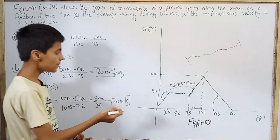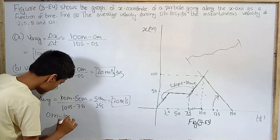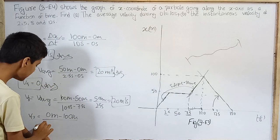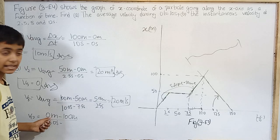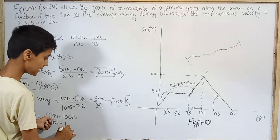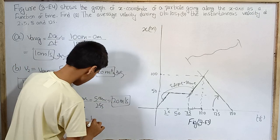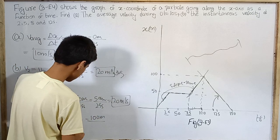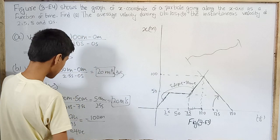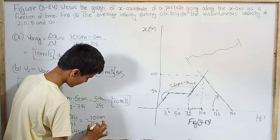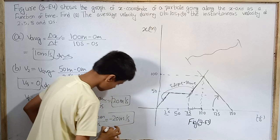So here, finally at 15 seconds the particle is at 0 meters, minus initially at 10 seconds it was at 100 meters. This is 0 minus 100 meters over 15 seconds minus 10 seconds, which equals negative 100 meters over 5 seconds, which is minus 20 meters per second.